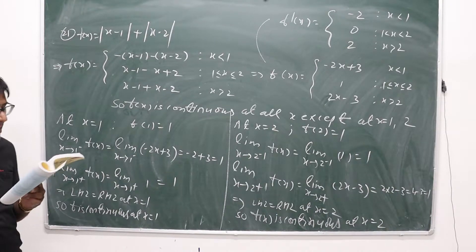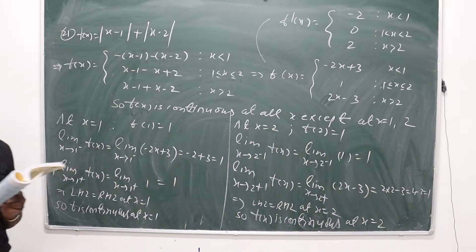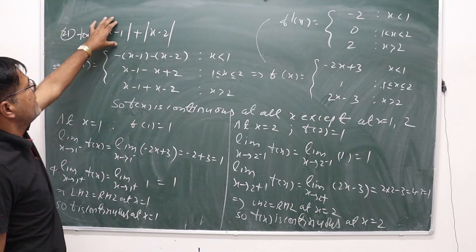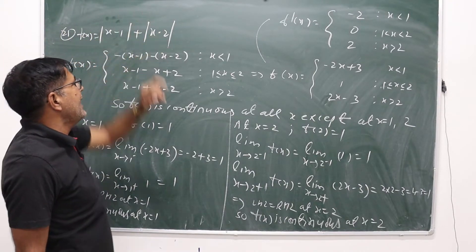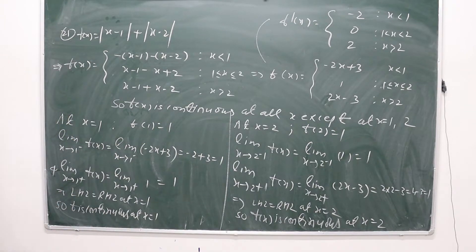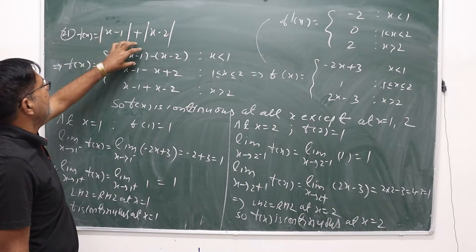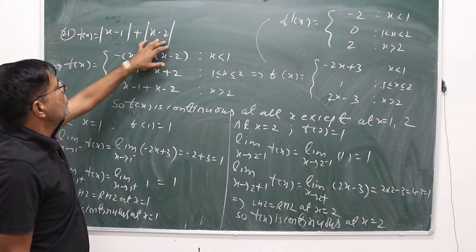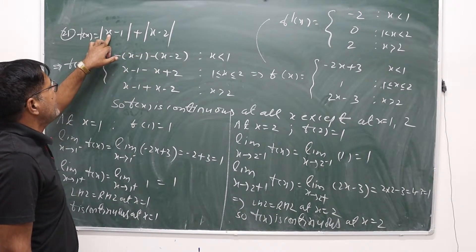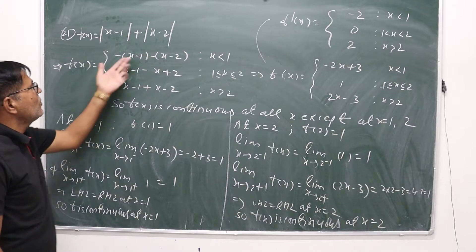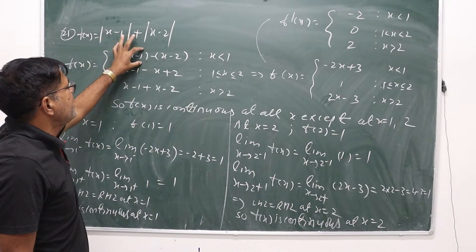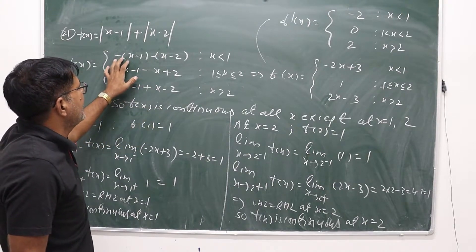Question 21: Does there exist a function which is continuous everywhere but not differentiable at exactly two points? Justify your answer. Let us take the example f(x) = |x - 1| + |x - 2|. We define this piecewise. When x < 1, both (x-1) and (x-2) are negative, so f(x) = -(x-1) - (x-2) = -2x + 3.